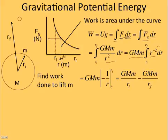So the end result is GMm/ri - GMm/rf, and that is the work and the change in potential energy. Technically it should be the change in potential energy.